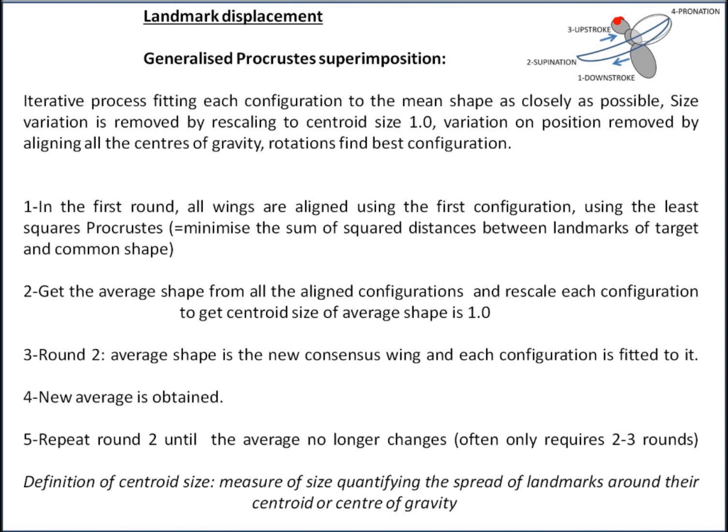In the first round, all configurations are aligned using the first specimen via least squares Procrustes, which minimizes the sum of squared distances between the landmarks of the target and the original common shape. After aligning all configurations, you get the average shape from all aligned configurations and then rescale each configuration to a centroid size of one.